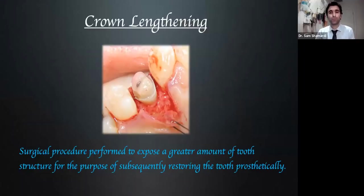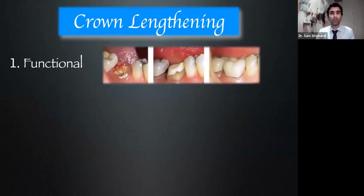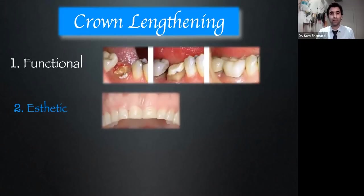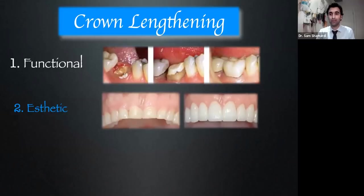In terms of the basic definition of crown lengthening, we're looking at surgical procedures to expose a greater amount of tooth. Unlike part one, where we were focusing on more functional or traditional crown lengthening cases where we have an insufficient amount of tooth structure and are trying to increase it for restorative purposes, in tonight's seminar we're really focusing on aesthetic cases, and we're going to be diving into that in detail.